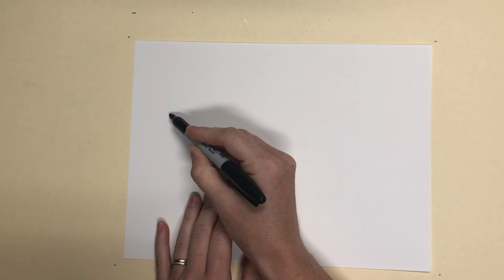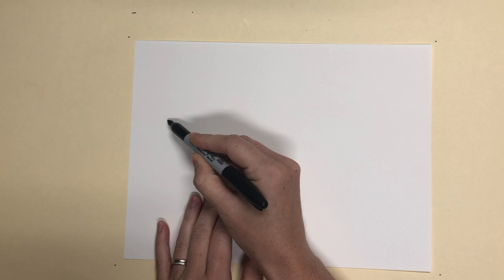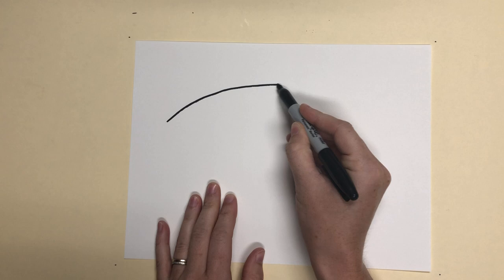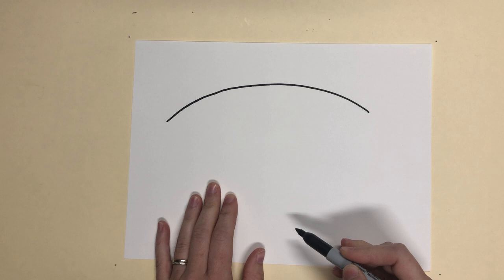What we're going to do is start with the top of the fish, not the mouth and not the fins, just the back. Start about here and you're going to curve a line. Notice I'm going nice and slow, and stop here.